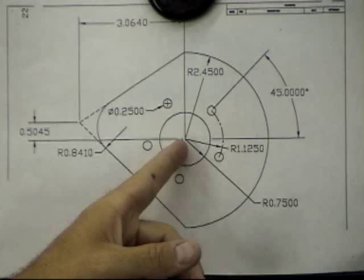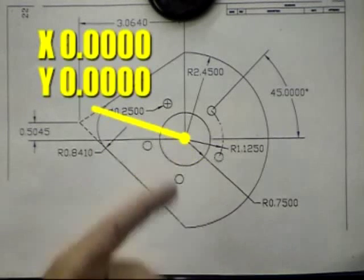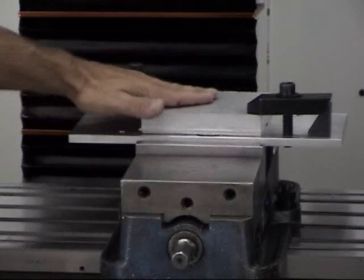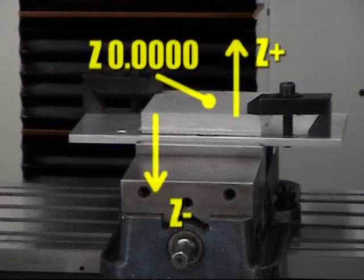So we're going to pick x, y, z zero being at the center location of this print and z being the top of my stock. That's step number one.